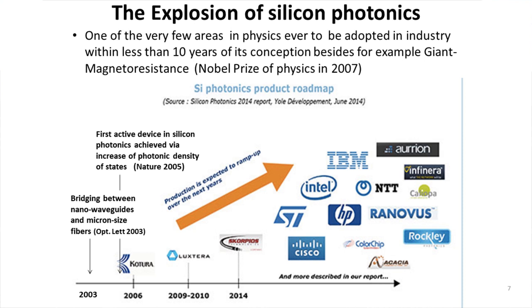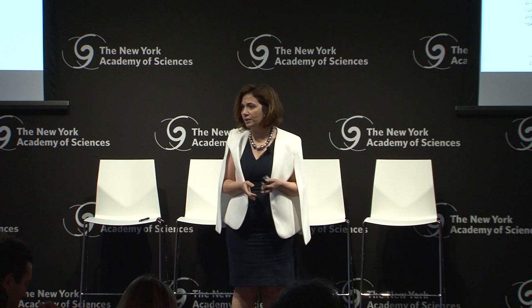We overcame several of these challenges. The field started around 2001 to 2003, and it completely exploded — this is the field in physics that evolved the fastest, perhaps except giant magnetoresistance which got the Nobel Prize in 2007. It's now being used everywhere. It's definitely not just data centers anymore. The level of integration is so high that applications are in medical devices, sensing, remote sensing, and integration with fluidics.